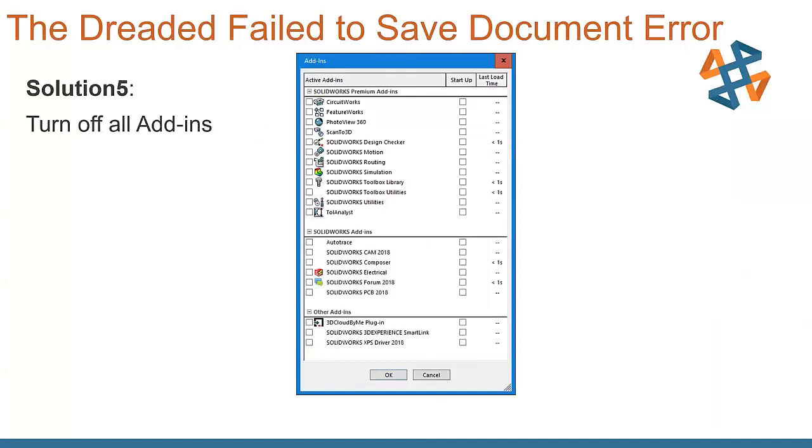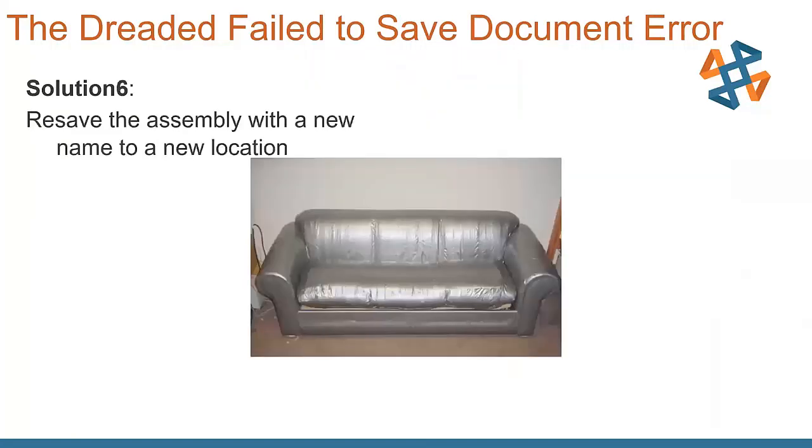Next one that we have here, turning off all the add-ins. We want to turn off all the add-ins, see if one of those is maybe causing a little bit of a hiccup in our file there. Kind of like our Goodwill couch here, re-save the assembly to a new file with a new location and see what happens to it. If it was on a network drive, save it to the desktop, give it a new name, see if there's something maybe in the network or the naming convention that is holding that thing up.